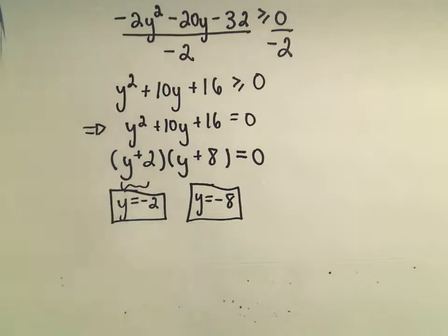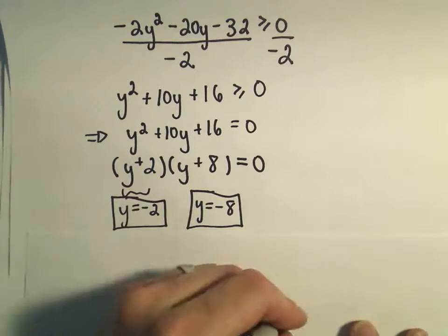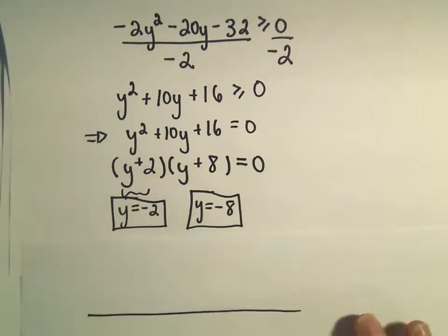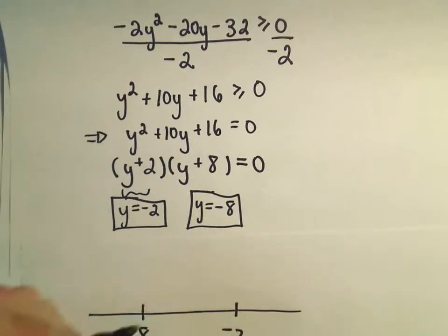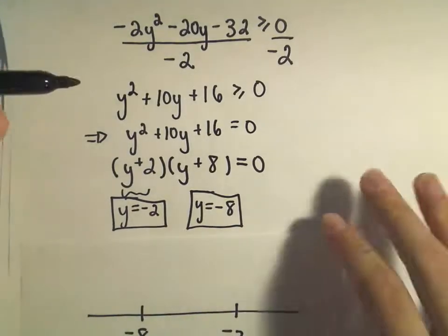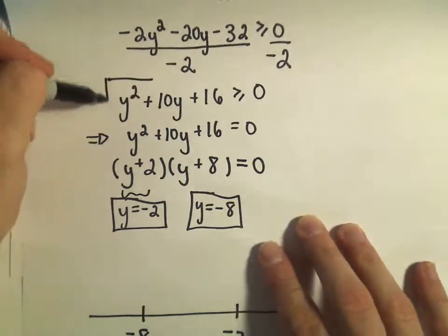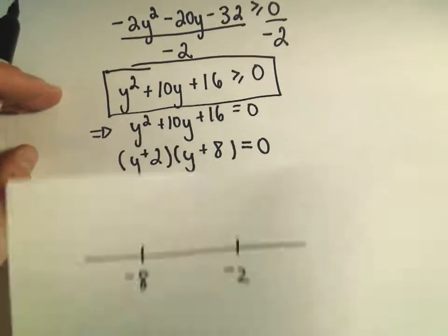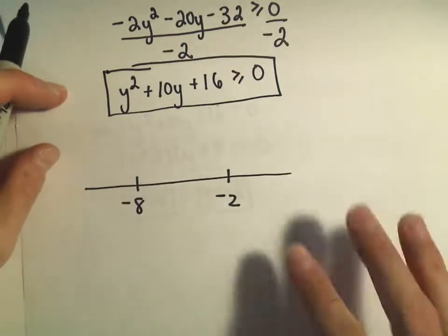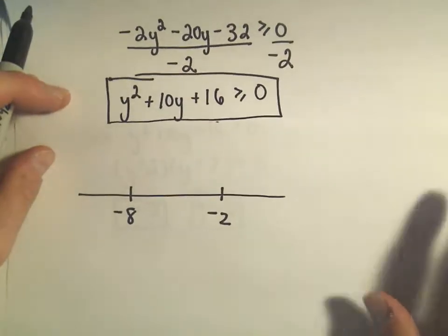At this point, for inequalities in general, what I do is put these numbers on a number line — I've got negative 8 and I've got negative 2. Then I go back and look at the inequality I'm trying to satisfy: y squared plus 10y plus 16, and we're trying to figure out when that's greater than or equal to zero.